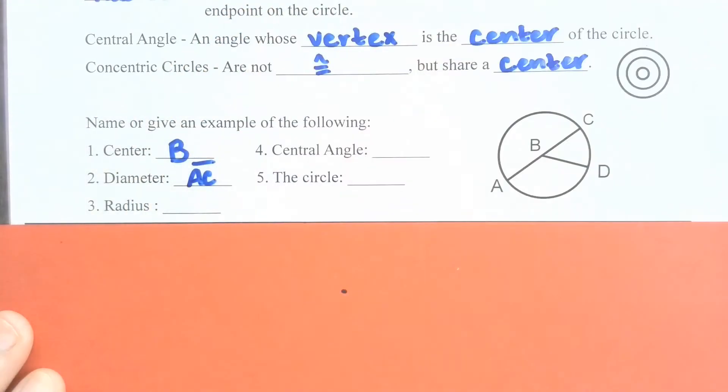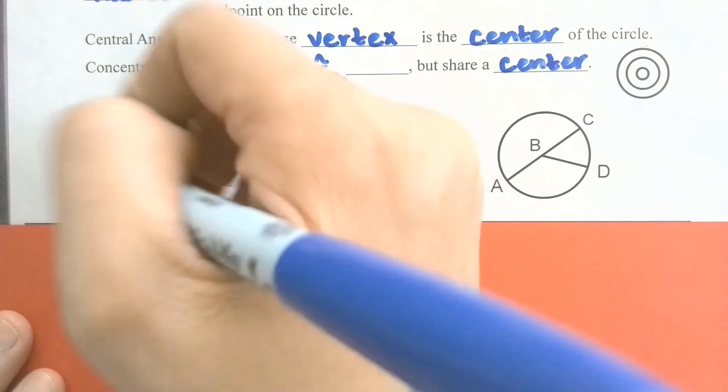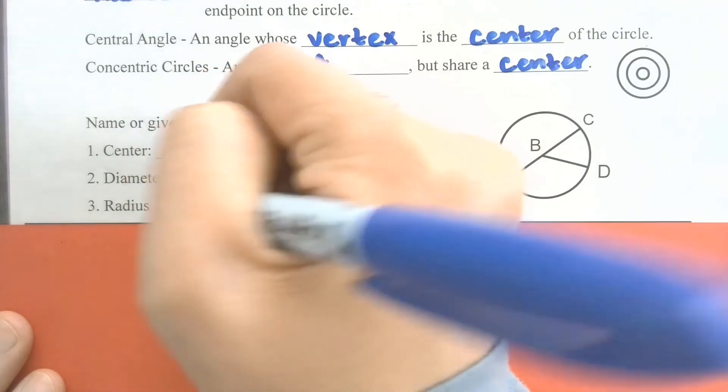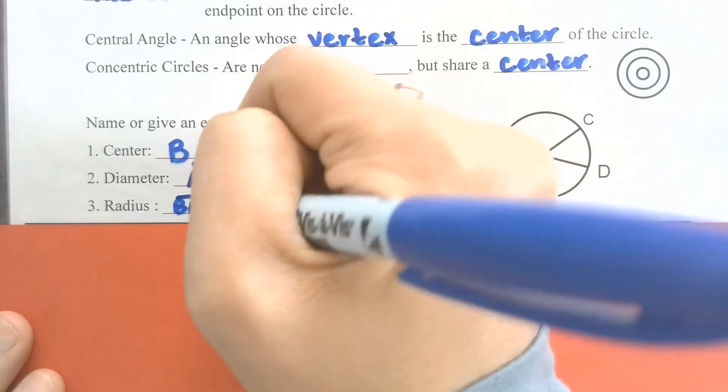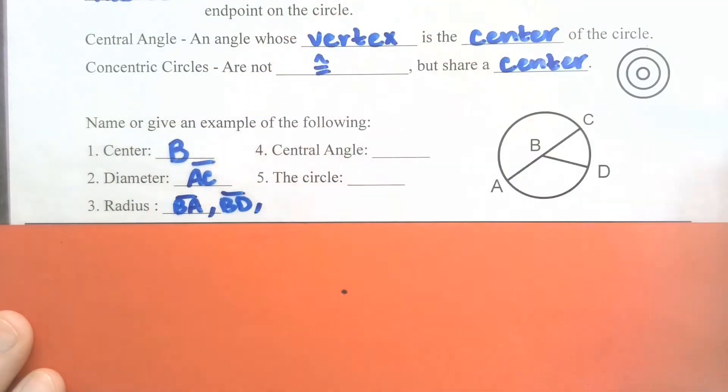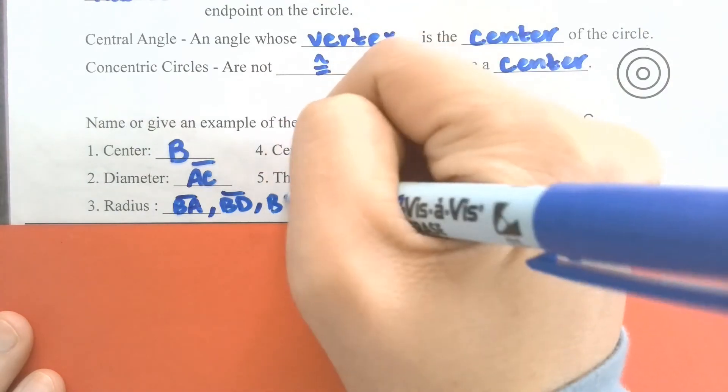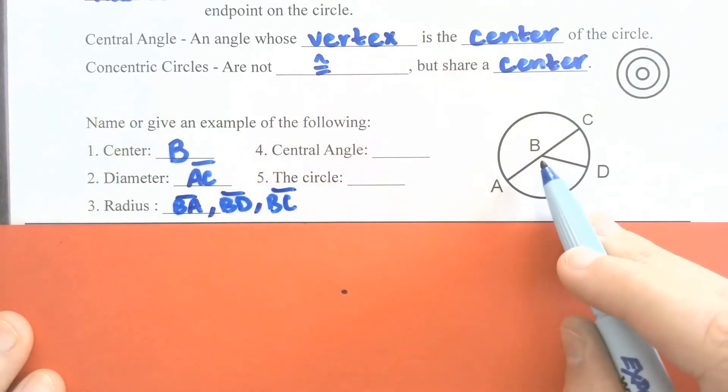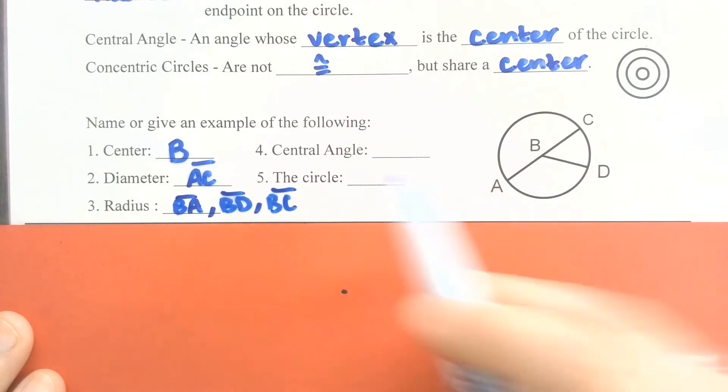If I'm naming the diameter, I do want to go ahead and make it a segment, so use proper notation. For a radius, we've got three that are drawn in here. BA is a radius, and remember I can call it AB as well. BD is a radius, and so is BC. As long as it has one endpoint on the circle and one point is the center, then you're talking about a radius.